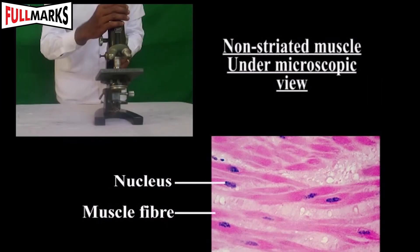Non-striated muscles or smooth muscles: The cells are spindle-shaped and the nucleus is centrally located. These muscles do not show dark and light bands. Non-striated muscles are involuntary in nature.